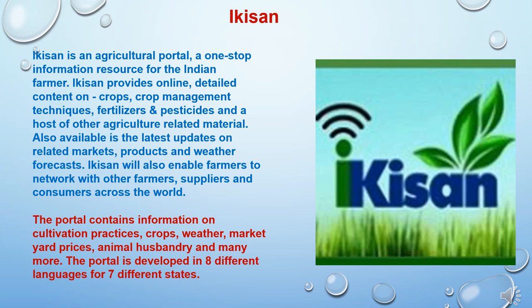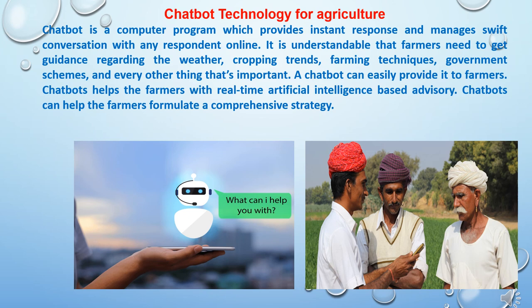The portal is developed in 8 different languages for 7 different states. Another technology transfer tool is chatbot technology for agriculture. A chatbot is a computer program which provides instant responses and manages swift conversations with any respondent online. Farmers need to get guidance regarding the weather, cropping trends, farming techniques, government schemes, and every other thing that is important — a chatbot can easily provide it to farmers. Chatbot helps farmers with real-time artificial intelligence-based advisory and can help farmers to formulate a comprehensive strategy.